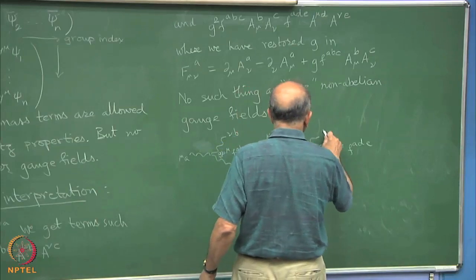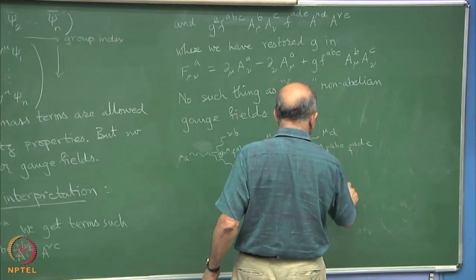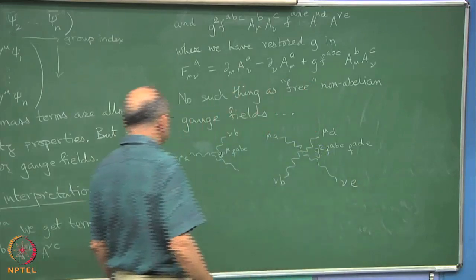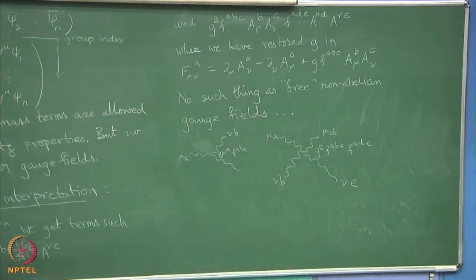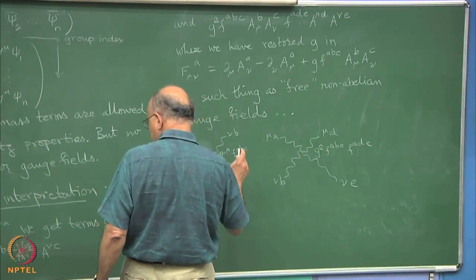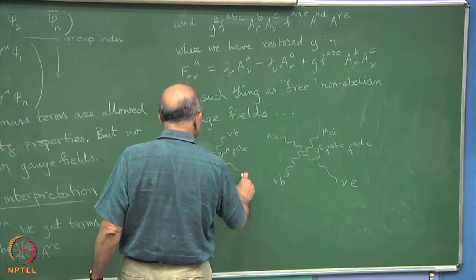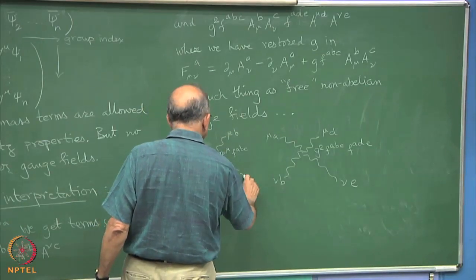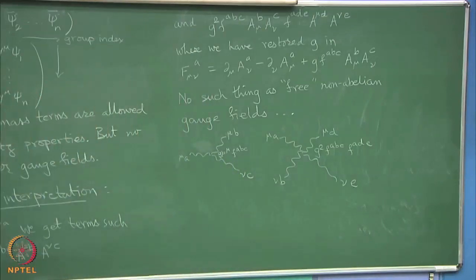And then there is a 4 gluon diagram with that G square. A mu, that has to be mu.